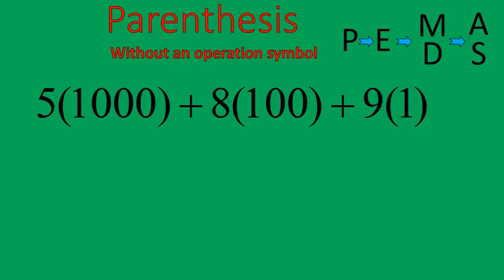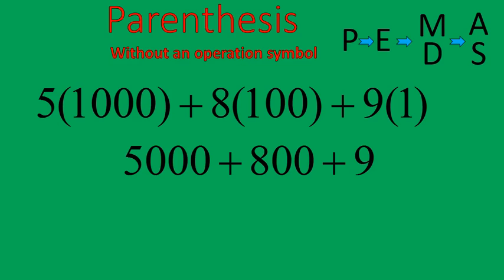Let me give you another, even longer question. 5 times 1,000 plus 8 times 100 plus 9 times 1. And the way I'm saying it should tell you that it is multiplication. But whenever you're given parentheses without a symbol, it means multiplication. So this is 5,000 plus 800 plus 9, which gives us 5,809. Kind of a ridiculous question, I know. But just an example to show you how that works when you don't have the symbol.